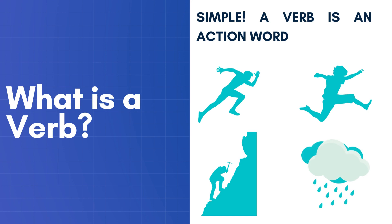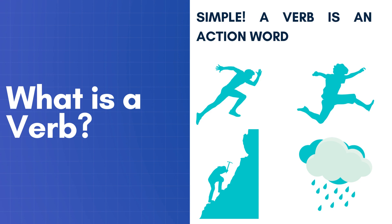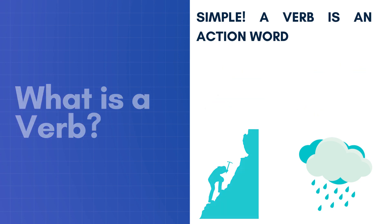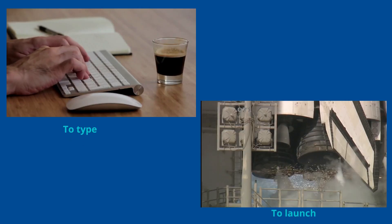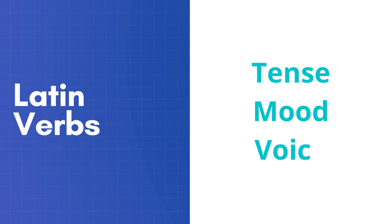To start, we want to make sure we understand what a verb is. You've seen this graphic before if you've been watching my videos — a verb is an action word. Actions like running, jumping, skipping, reining, to type, to launch — anything involving an action is a verb. And when we're dealing with Latin verbs, there are three things to think about: tense, mood, and voice.